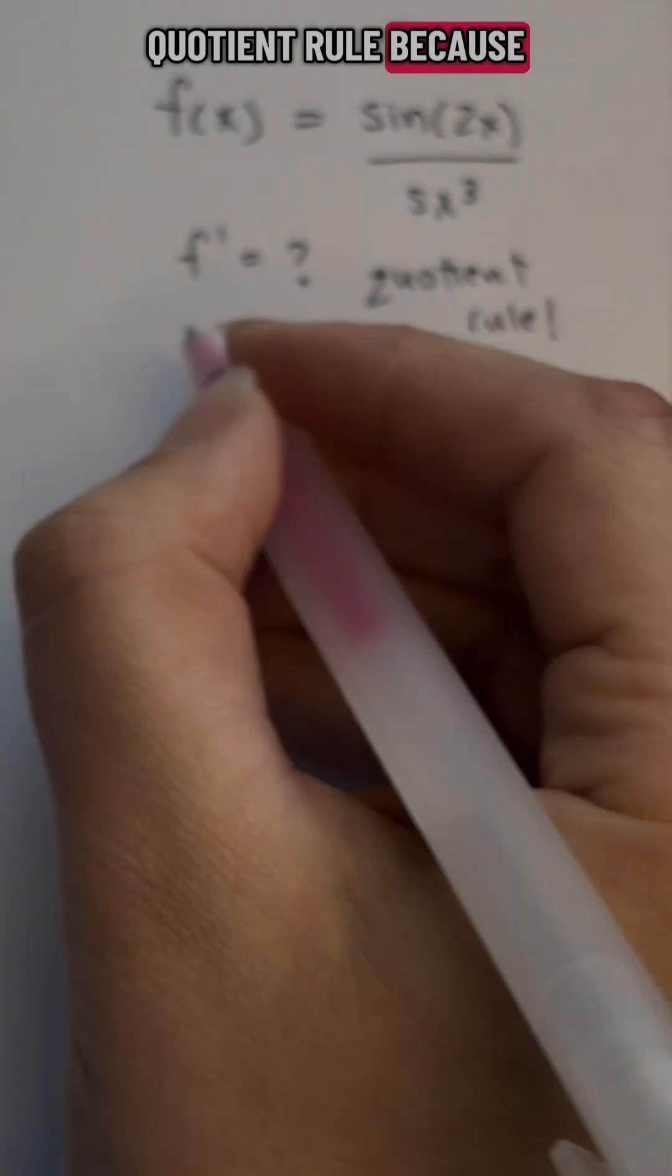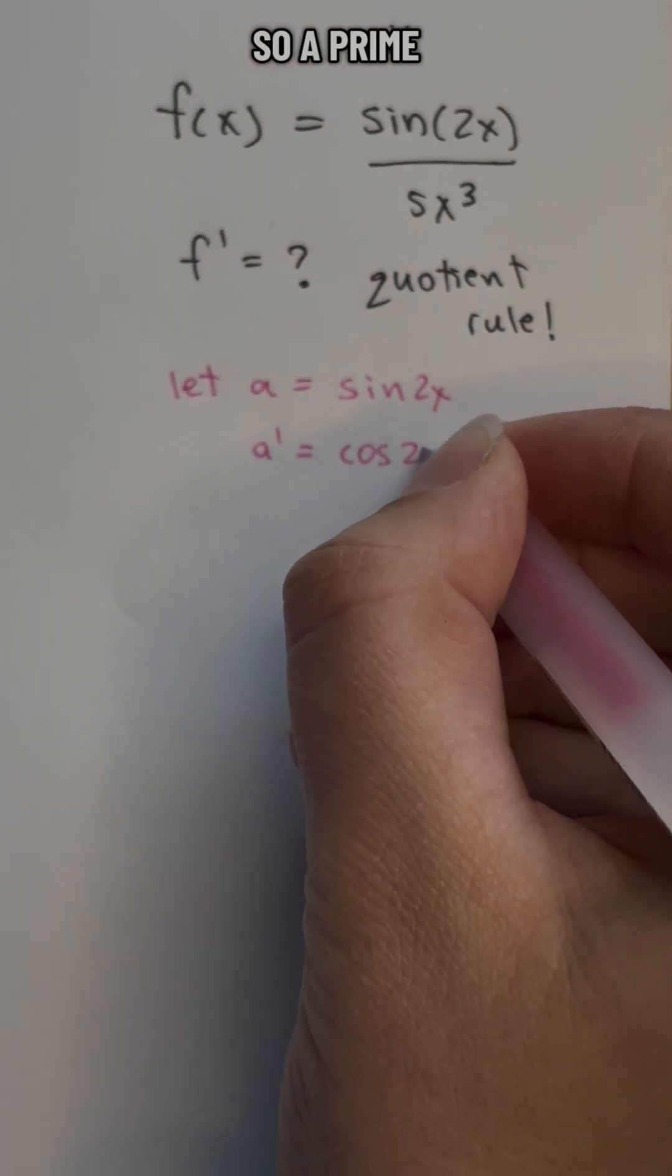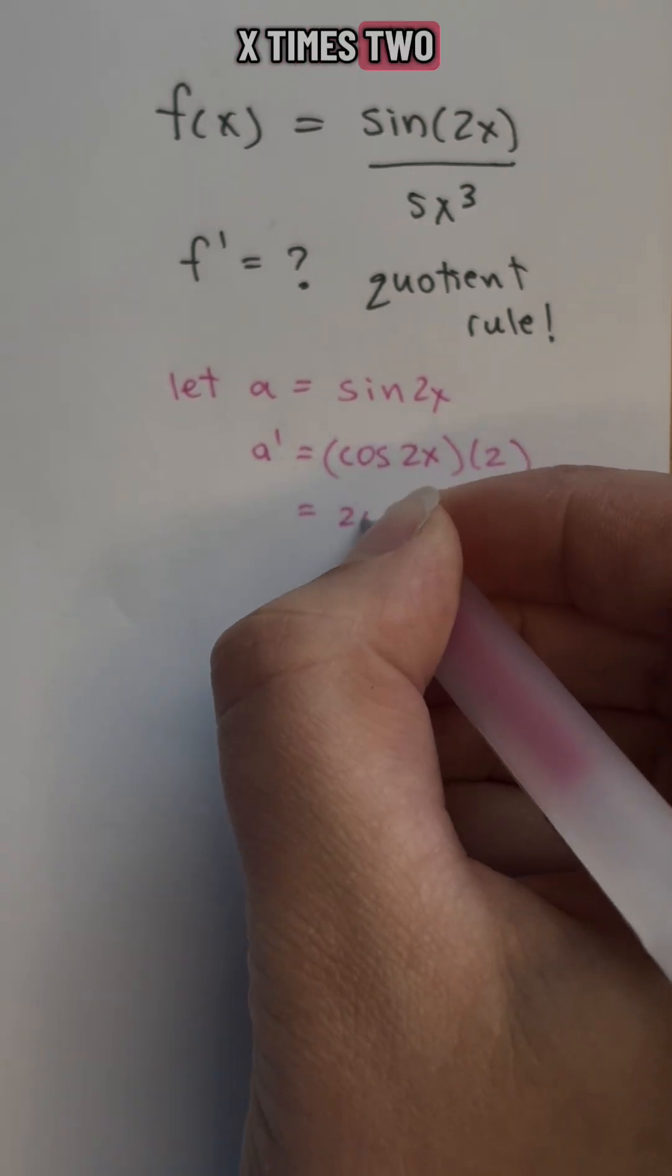We can use quotient rule because we have a division. We're going to let a equal sine 2x, so a prime is cosine 2x times 2 by chain rule.